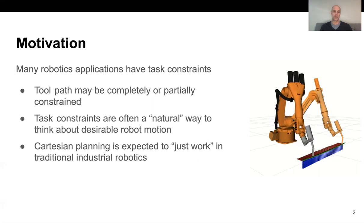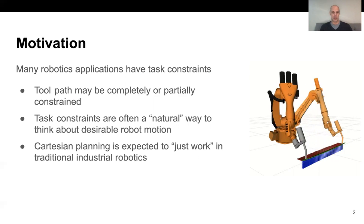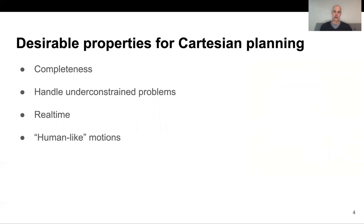MoveIt has some support for it, but it's still far from perfect, which is why we started working on this new functionality. Before we get into that, let's first think about what the ideal Cartesian planner should look like. It should provide completeness guarantees, meaning that if a solution exists it should eventually find it. It should be able to handle both constrained and under-constrained problems — under-constrained meaning there are fewer constraints than degrees of freedom. Ideally, this system would also be real-time and quickly respond to changes in the environment. And finally, we'd also like human-like motions, where if there are more degrees of freedom available it should move in a way that looks natural.